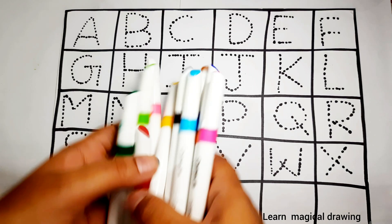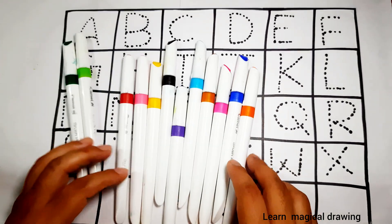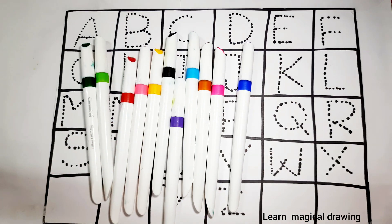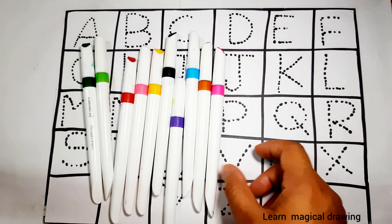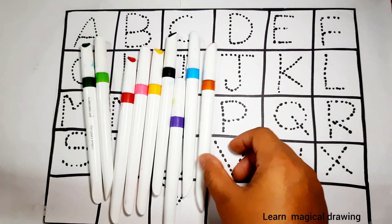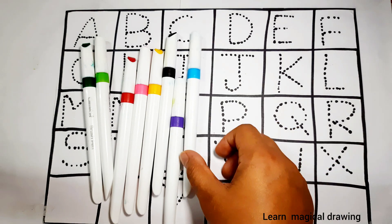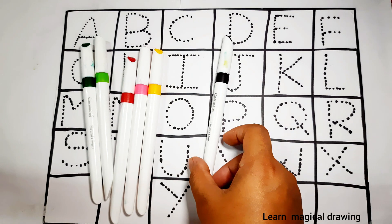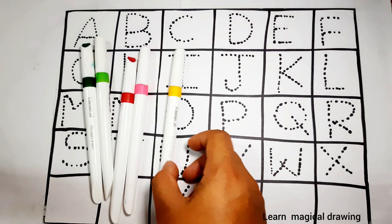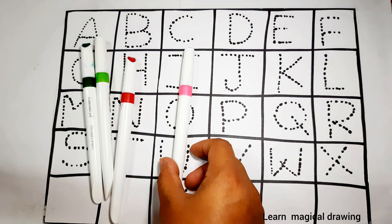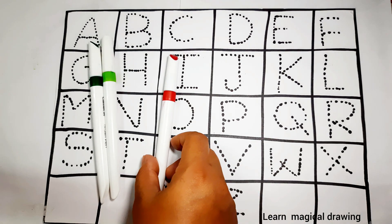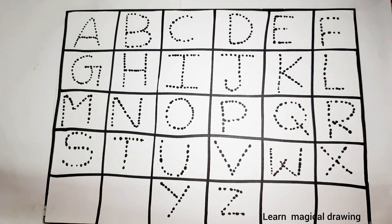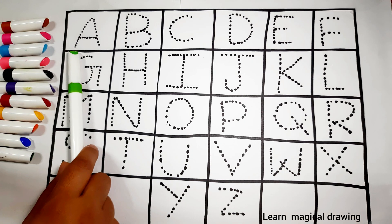Hello Kids, let's learn colors and alphabets. Orange color, blue color, pink color, brown color, sky blue color, purple color, black color, yellow color, light orange color, red color, light green color, and black color.